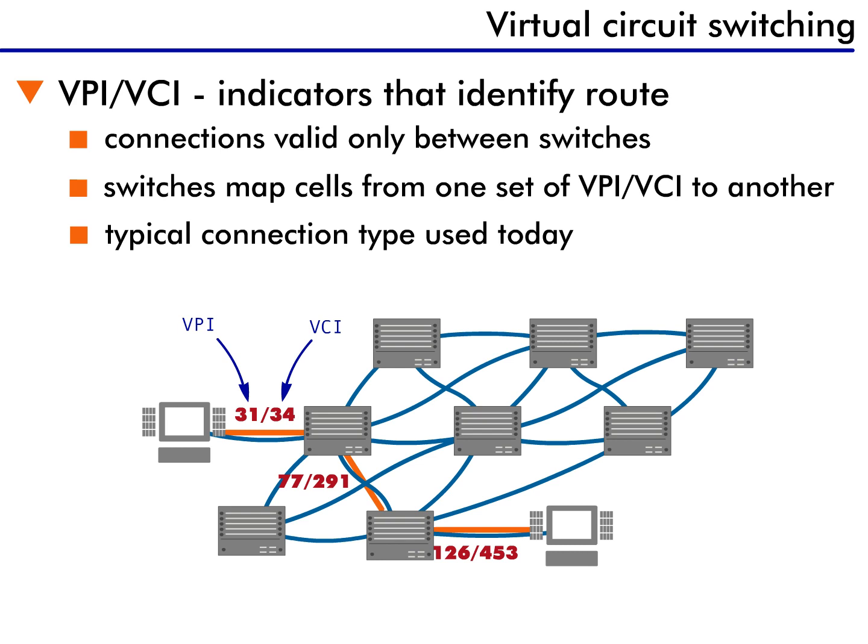Now, let's take a look at how circuit switching works. An important thing about VPI and VCI indicators is that they are only valid between switches. This means they change all the time as you travel across the network.